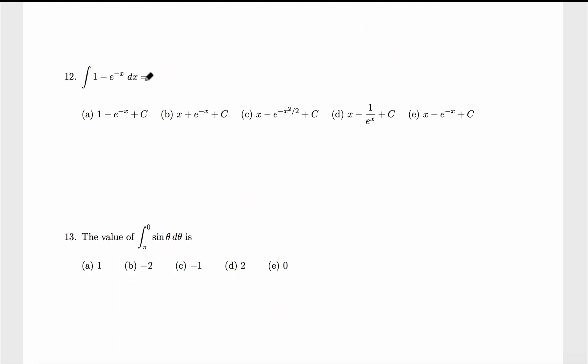Now here we got two terms. Anti-derivative of 1, which is x, minus anti-derivative of e to the negative x. E to the negative x anti-derivative, that's e to the negative x. By the way, when we integrate exponential function, when we differentiate or integrate, it will always be the same.